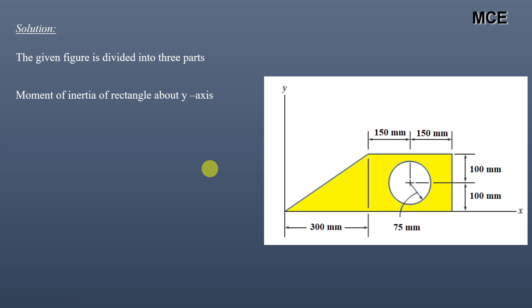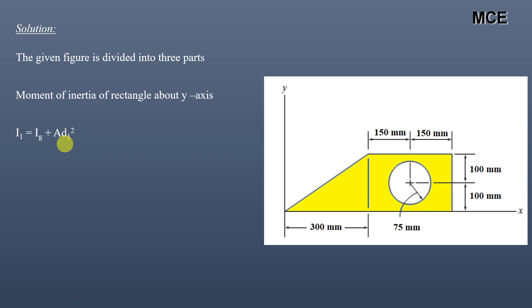The moment of inertia of this rectangle about the y-axis will be equal to the moment of inertia of this rectangle about its own centroidal y-axis, which is parallel to this y-axis, plus the area of the rectangle multiplied by the distance between its own centroidal y-axis and this y-axis. The moment of inertia about its own centroidal y-axis equals height of the rectangle multiplied by the cube of the width divided by 12, plus area of rectangle multiplied by the distance between the centroid and the y-axis.